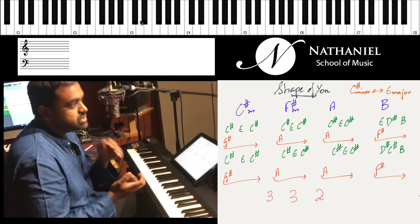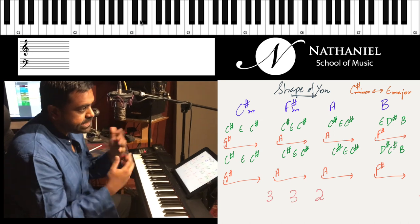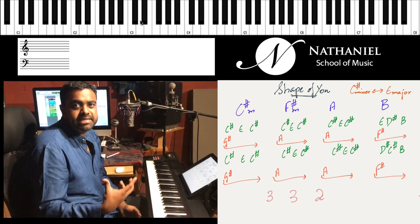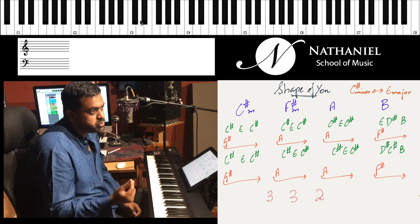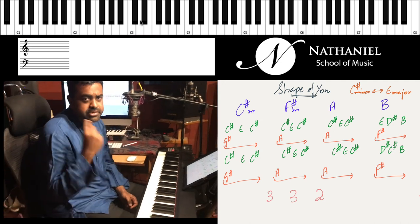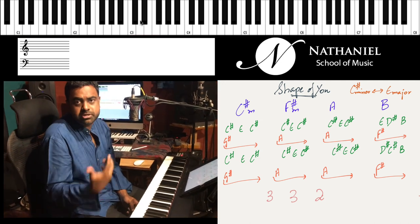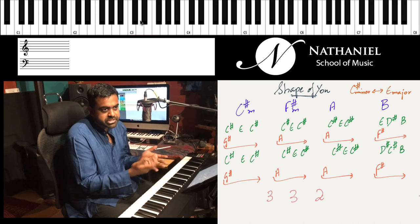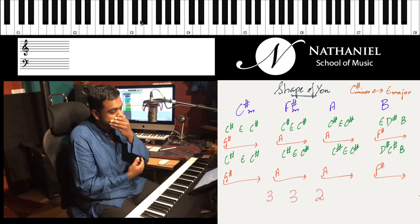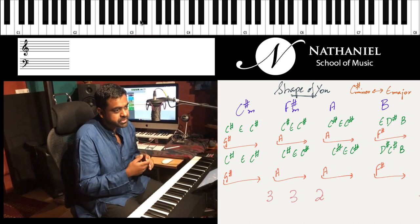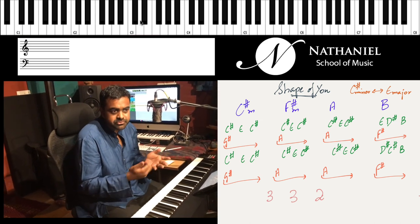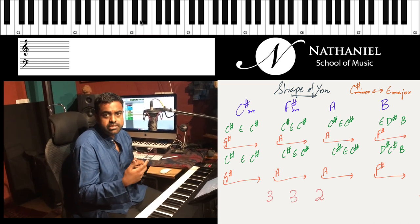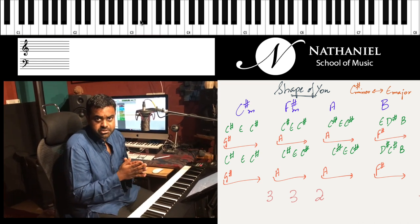One might look at this as 8th notes without the traditional accent — 1-&, 2-&, 3-&, 4-& — which we're used to a lot in classical music. But in this groove, which some may also call the salsa groove, you're basically focusing a lot on the accents of the song: 1-&, 2-&, 3-&, 4-&.